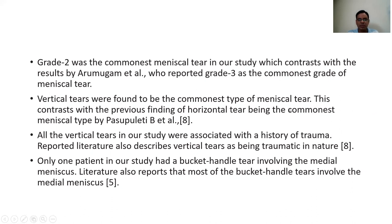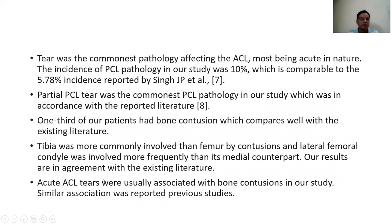Vertical tears were found to be the most common type of meniscal tear, in contrast with the previous finding of horizontal tear being the commonest type by Pasukkulati B et al. All vertical tears in our study were associated with a history of trauma; reported literature also describes vertical tears as traumatic in nature. Only 1% in our study had a bucket-handle tear, all in the medial meniscus. ACL tear was the commonest pathology affecting the ACL, most being acute in nature. Partial PCL tear was the commonest PCL pathology in our study, in accordance with existing literature. One third of patients had bone contusion, with tibial contusions more common than femoral, and the lateral femoral condyle involved more frequently than the medial. Acute ACL tears were usually associated with bone contusion, consistent with previous studies.